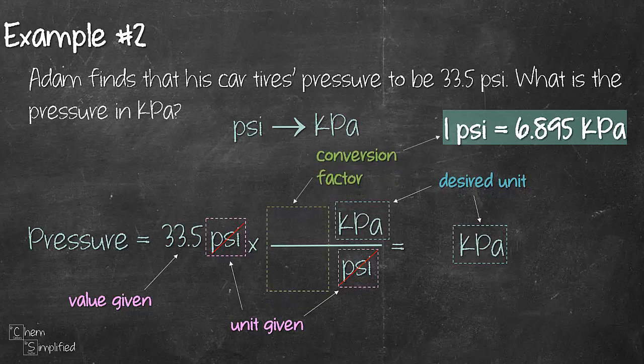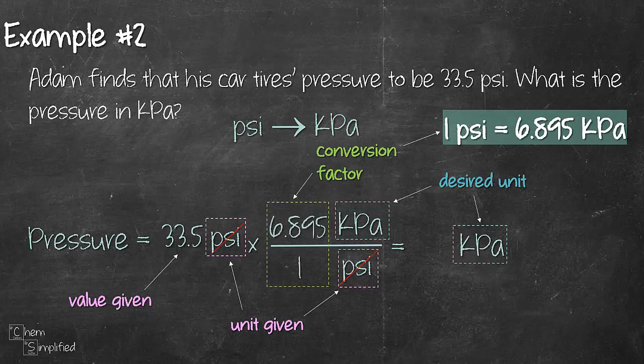And then finally we place in the numbers from the conversion factor which is 1 in front of PSI and 6.895 in front of kPa. After that we'll just do the math so we have 33.5 times 6.895 divided by 1. That will give us 231 kPa.